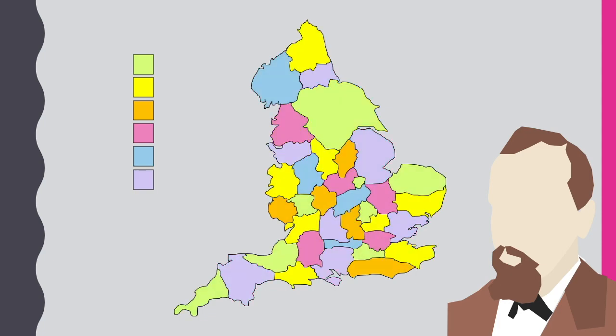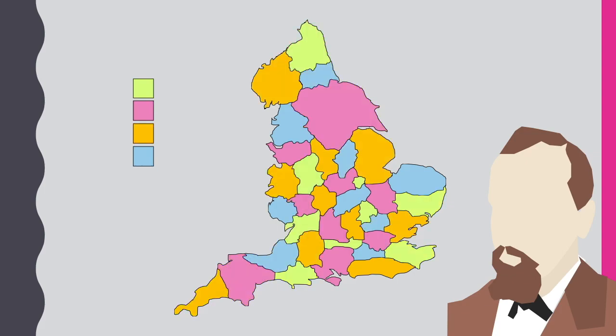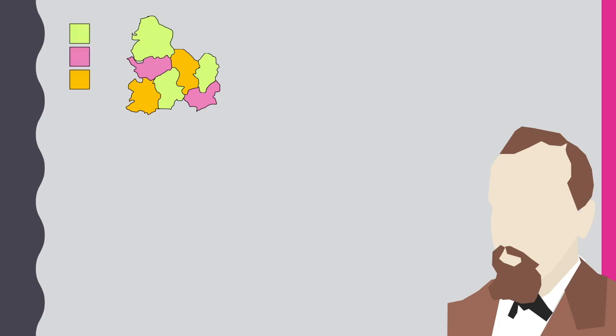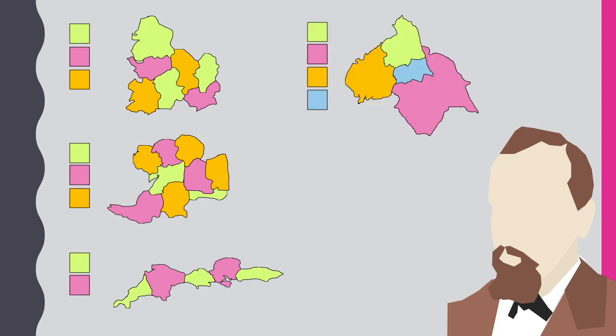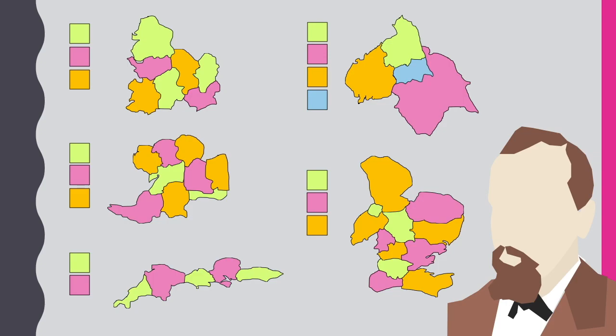This doesn't include the case of regions only sharing a single point, like on a chessboard. It's an interesting case of a mathematical problem because although the problem and idea seem simple, it wasn't until some 120 years later, after the rise of computers, that a proof was finally developed by Kenneth Appel and Wolfgang Haken.